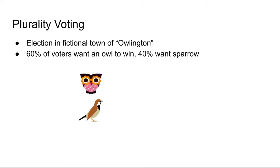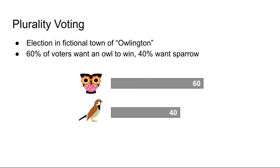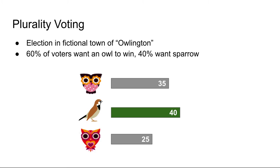We're likely to see the owl win with 60% of the vote. However, a third candidate decides to enter the race — another owl. On election day, the owl vote is split, and the sparrow wins. This is an example of the common problem of vote splitting that can happen under plurality voting, which has the effect of denying the will of the majority.